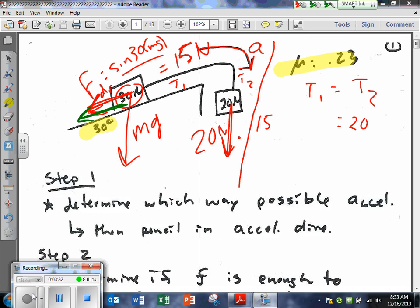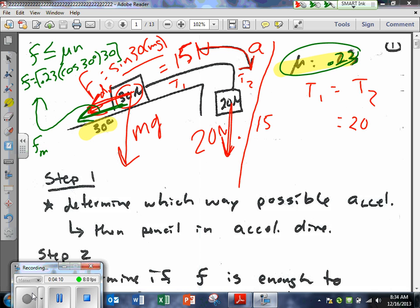Because it's going to oppose that motion, that acceleration up the ramp. So friction's got to be in the opposite direction. Now, here's the deal. Remember, friction can be less than or equal to the coefficient times the normal. Okay, so in this case, if it was equal to, the coefficient here is 0.23, right? So I'm going to put that in, 0.23, and then the normal is cosine 30 times 30. So friction at max could be then 5.98 newtons.